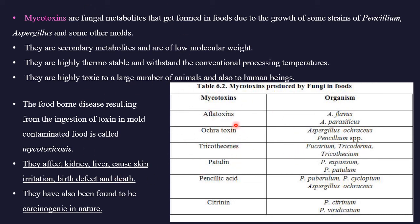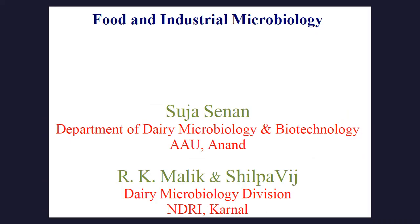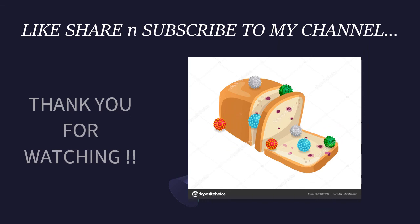Examples of mycotoxins: aflatoxins produced by Aspergillus flavus and Aspergillus parasiticus; ochratoxins by Aspergillus ochraceus and Penicillium species. Try to memorize at least three to four examples for your answers. All this information is from the book 'Food and Industrial Microbiology' by Suja Senna — easy language, easy to understand and memorize for answers. Hope this video was helpful. Please like, share, and subscribe to the channel.